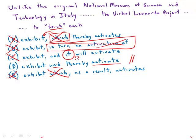That is a correct parallel structure. D is the only one free of grammatical errors, the only one that has the correct structure. Leonardo himself would be proud of it — it is the best answer choice.